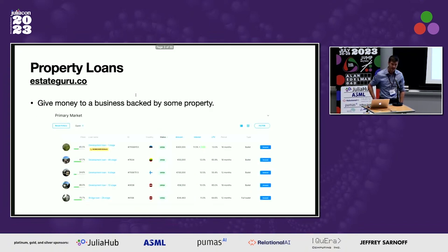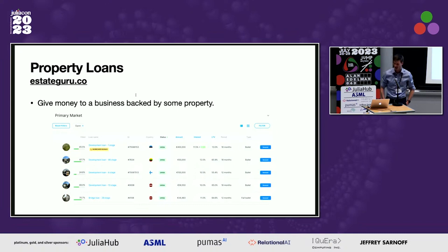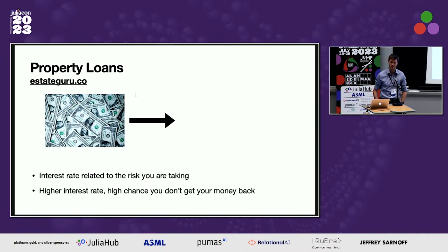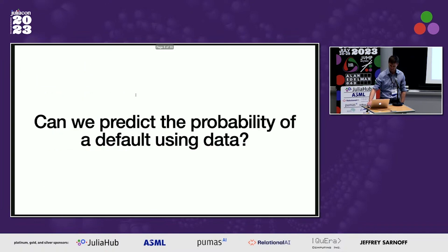On the financial side, we're looking at a dataset of property loans and exploring what happens when a company asks for money — do they pay it back or not? There's a company called Estate Guru that gives you the opportunity to invest in loans based on different properties around Europe. The interest rate is what you'll earn if they pay back. A high interest rate means higher risk — a higher chance that the loan defaults, meaning you don't get your money back. We want to use Estate Guru's data to predict which loans will default using machine learning.